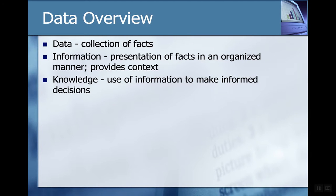The next level up is information, where we take all these facts and bring order to them. Above that is knowledge — the use of information to make informed decisions. Any form of human endeavor involves decision making, and to make those decisions you want to be as informed as possible.